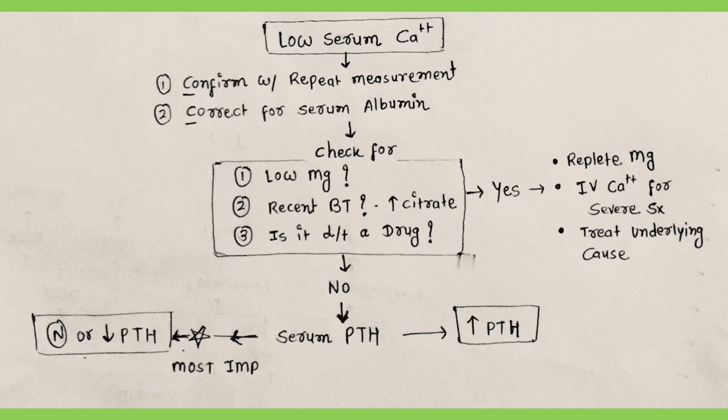Once true hypocalcemia is confirmed, the next step is to exclude certain causes. The first is massive blood transfusion, whereby citrate in transfused products binds to ionized calcium and leads to hypocalcemia.